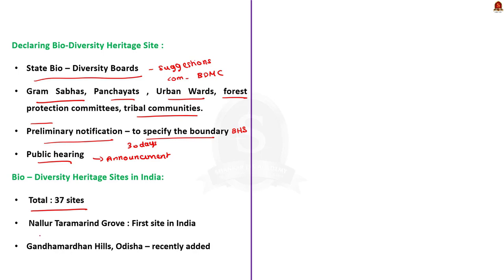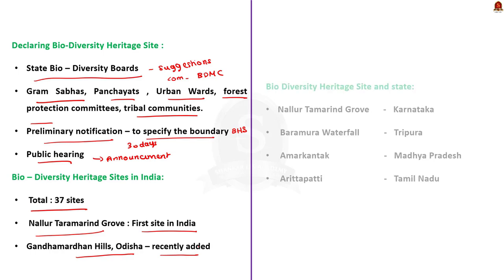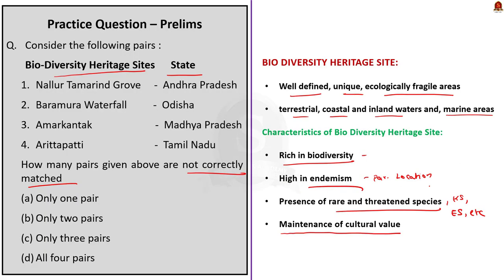Nallur Tamarind Grove is the first biodiversity heritage site of India, and Gandham Ardhan Hill of Odisha is the last added site. Nallur Tamarind Grove is in Karnataka, not Andhra Pradesh. Baramura Waterfalls is in Tripura. Arattupuzha is in Madhya Pradesh, and Arittapatti is in Tamil Nadu. Arittapatti is the first biodiversity heritage site of Tamil Nadu. The first and second pairs are not correct. Since the question asks for incorrect pairs, the answer is option B — only two pairs.